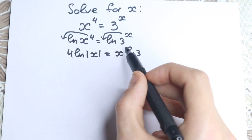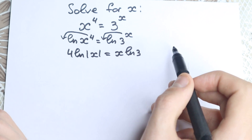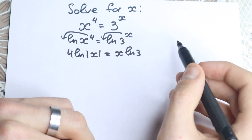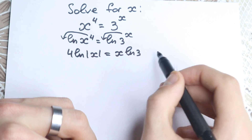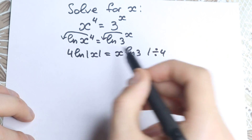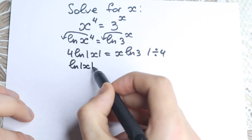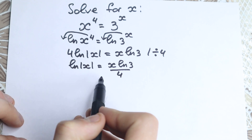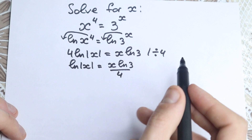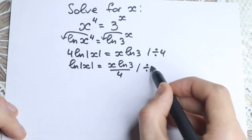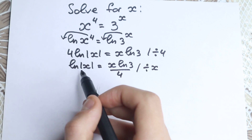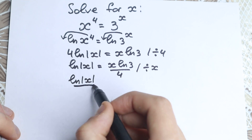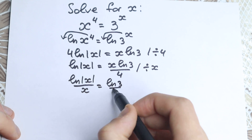Right now we don't have any powers or exponents. Next, let's group variables on the left and constants on the right. First, let's divide both sides by 4, giving us natural log of the absolute value of x equal to x times natural log 3 over 4. Then we divide both sides by x, so that natural log of the absolute value of x over x equals natural log 3 over 4.